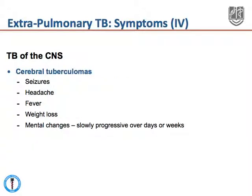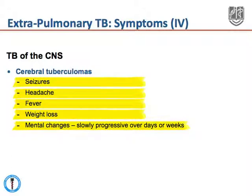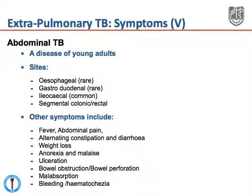In cerebral tuberculomas, patients often present with seizures, headaches, fever, weight loss, and progressive mental changes that may take days or weeks to evolve. Abdominal TB is generally a disease of younger people. The most common site is the ileocecal area, but any part of the gastrointestinal tract can be involved, including the esophagus, the gastric area, the colonic areas, and the rectal and anal areas.